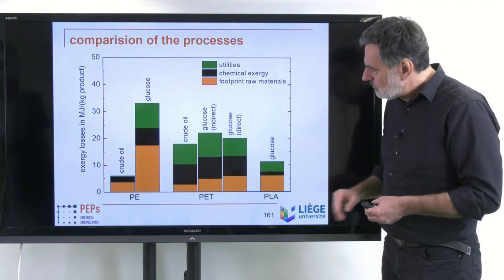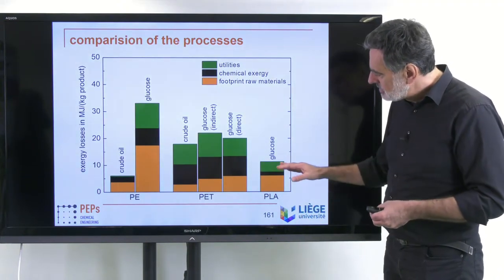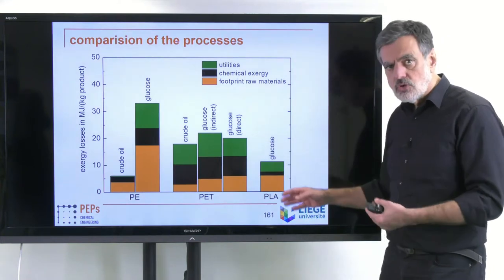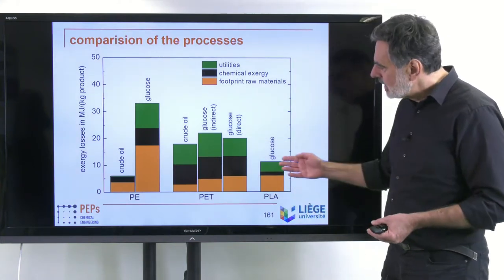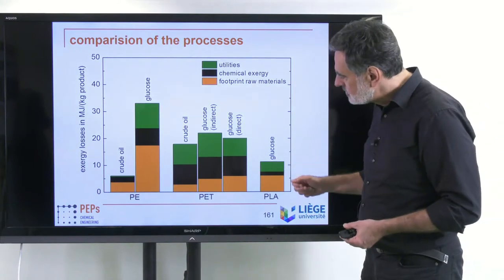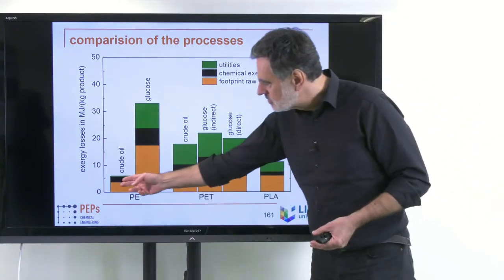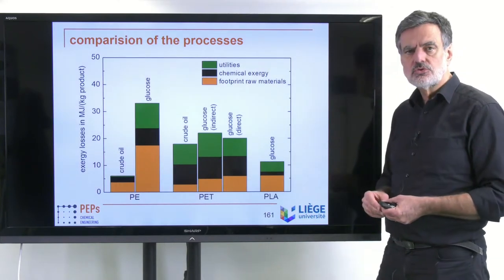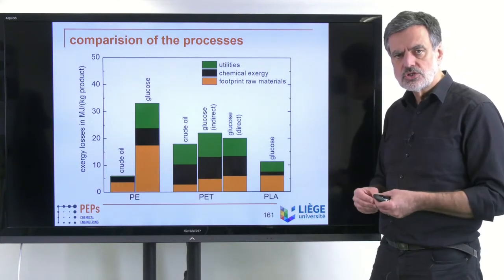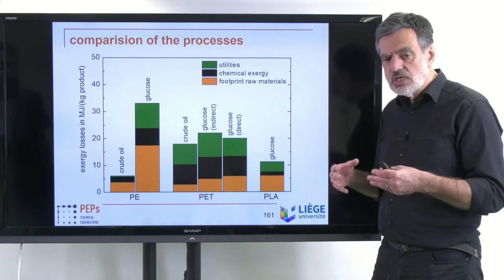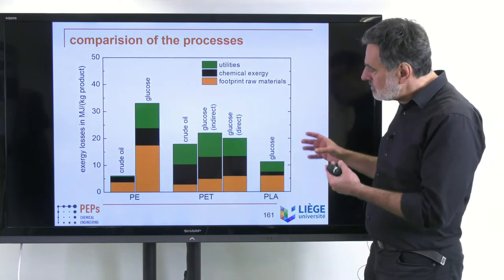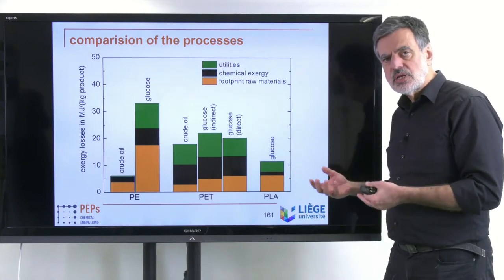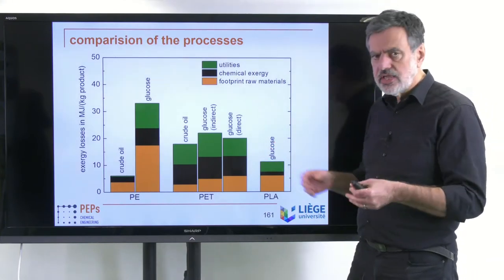Finally, if you go for polylactic acid, the exergy demand is decreased compared to PET — it contains more oxygen — and the exergy demand is not so different from polyethylene from crude oil. So that is a good substitute for future polymer production. We see that keeping the oxygen in the final product is quite beneficial with respect to mass balance — we get more mass of polymer — and also exergy-wise.